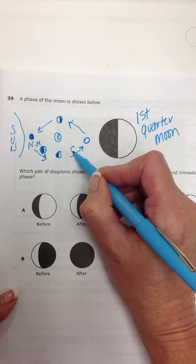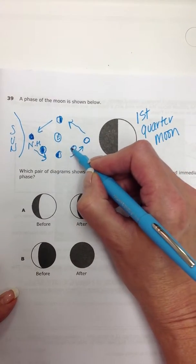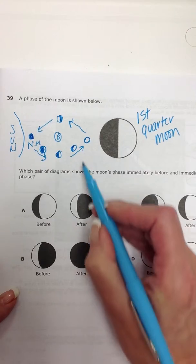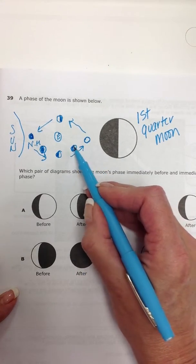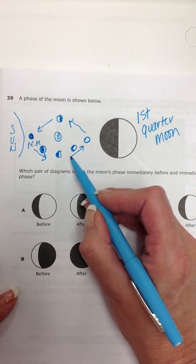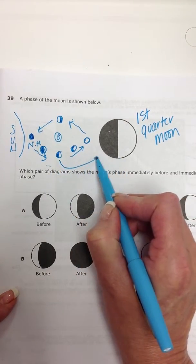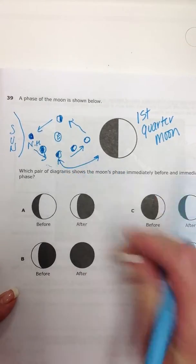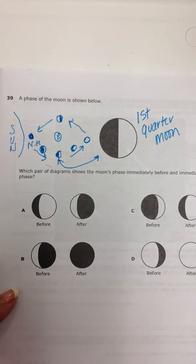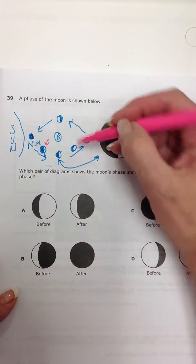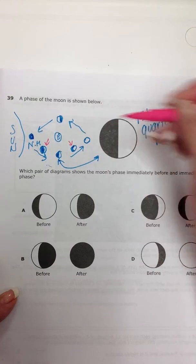more light on the right. And then we have a waxing gibbous, almost full moon, right? Just a little bit of sliver left dark. All right, so this kind of covers us because we know this and this correspond. So we're actually looking for a waxing crescent and a waxing gibbous.